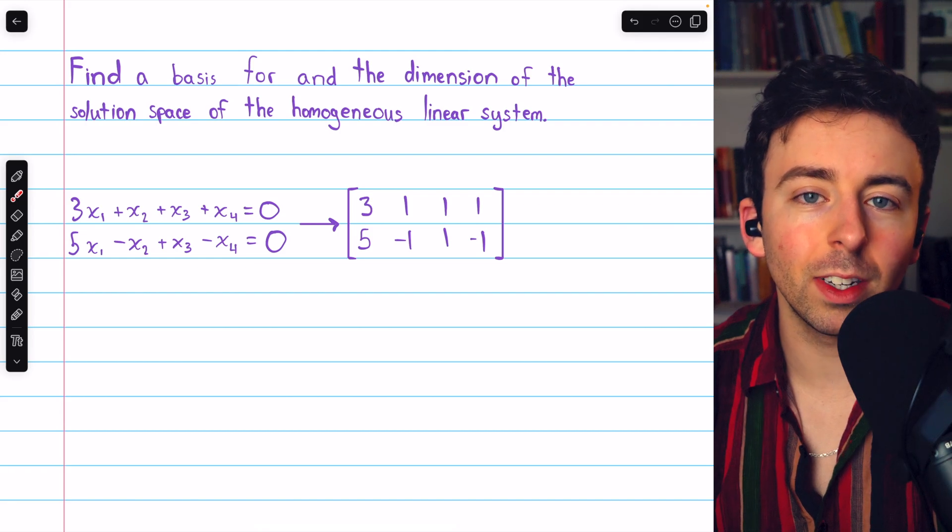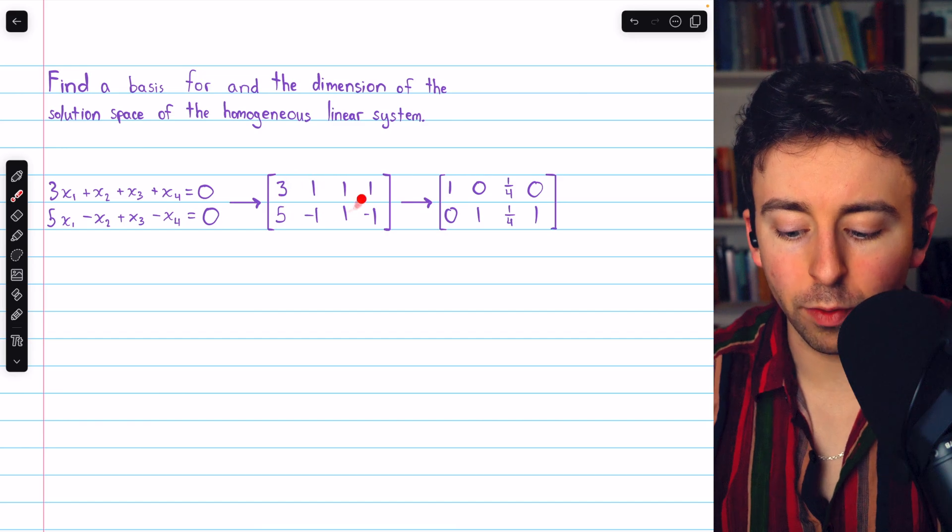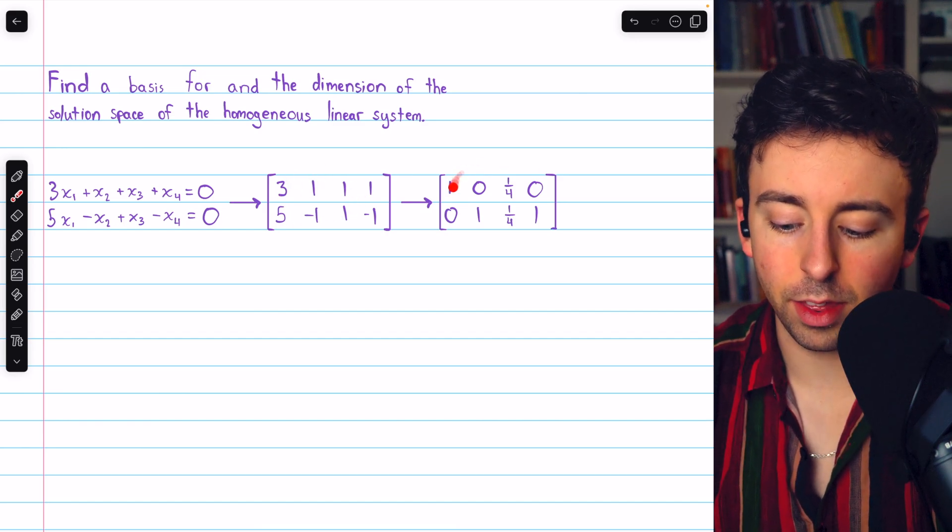Let's perform Gauss-Jordan elimination to get into reduced row echelon form. You can verify that the reduced row echelon form of this matrix is this one here.